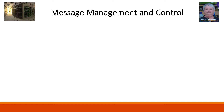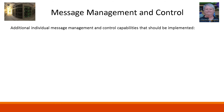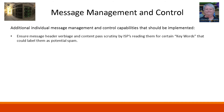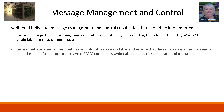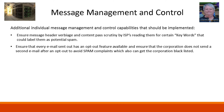Additional individual message management control capabilities that should be implemented also include the following: ensuring message header verbiage and content pass scrutiny by ISPs, which read them for certain keywords that could label them as potential spam; ensuring that every email sent out has an opt-out feature available to the recipient; and ensuring that the corporation does not send a second email after an opt-out, to avoid spam complaints, which can also get the corporation blacklisted.